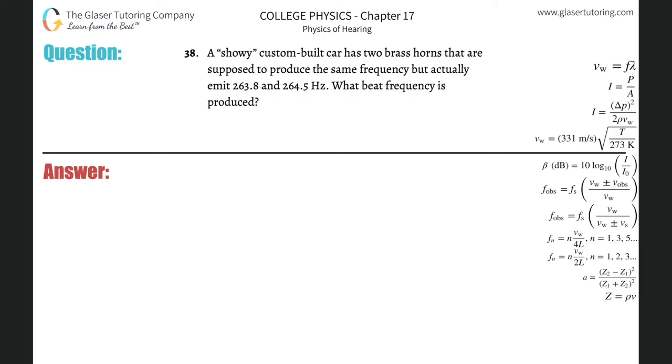Number 38: A showy custom-built car has two brass horns that are supposed to produce the same frequency but actually emit 263.8 and 264.5 hertz. What beat frequency is produced?